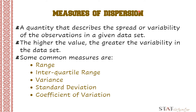While Central Tendency tells you where most of your data points lie, variability summarizes how far apart your points are from each other. For example, with the mean you will have a single value, but you don't know about the other data points—how far they are from the mean. So this variability or dispersion gives you an idea of how far apart from each other your points are in your data set.